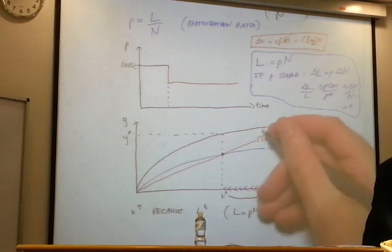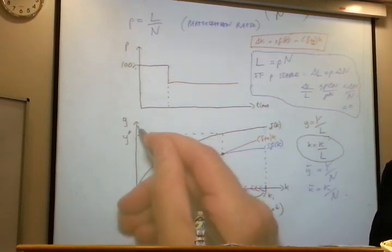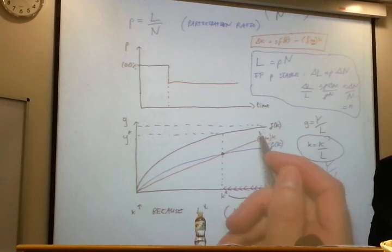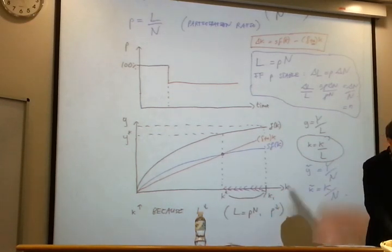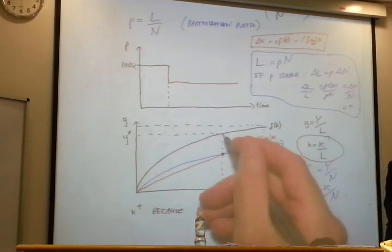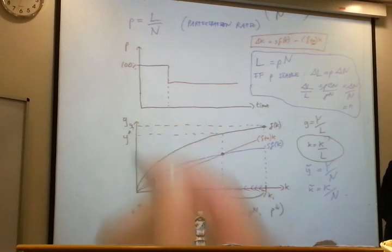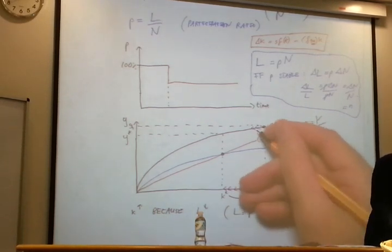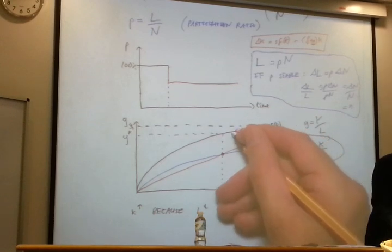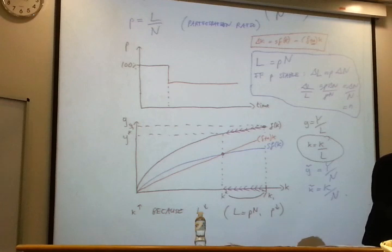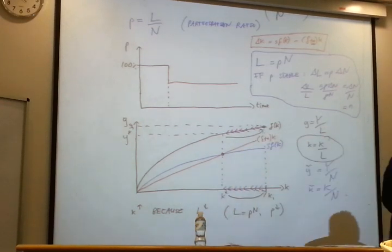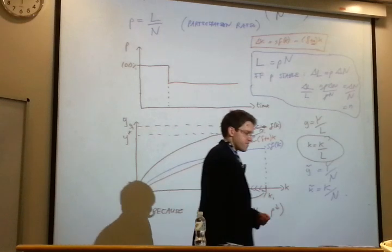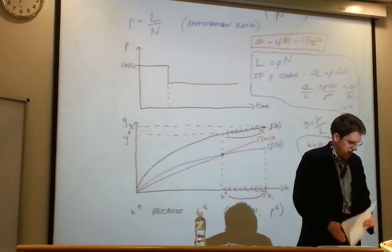So what happened to output per worker in the aftermath of this change? Well, we moved right, so we went up the production function. Again, we didn't shift the production function because the change only ended up affecting small k, and that was a variable on the axis. We moved up to here, to say Y1. Once the capital stock starts falling again, the transition, you start moving back down the production function. So it's up, back down.